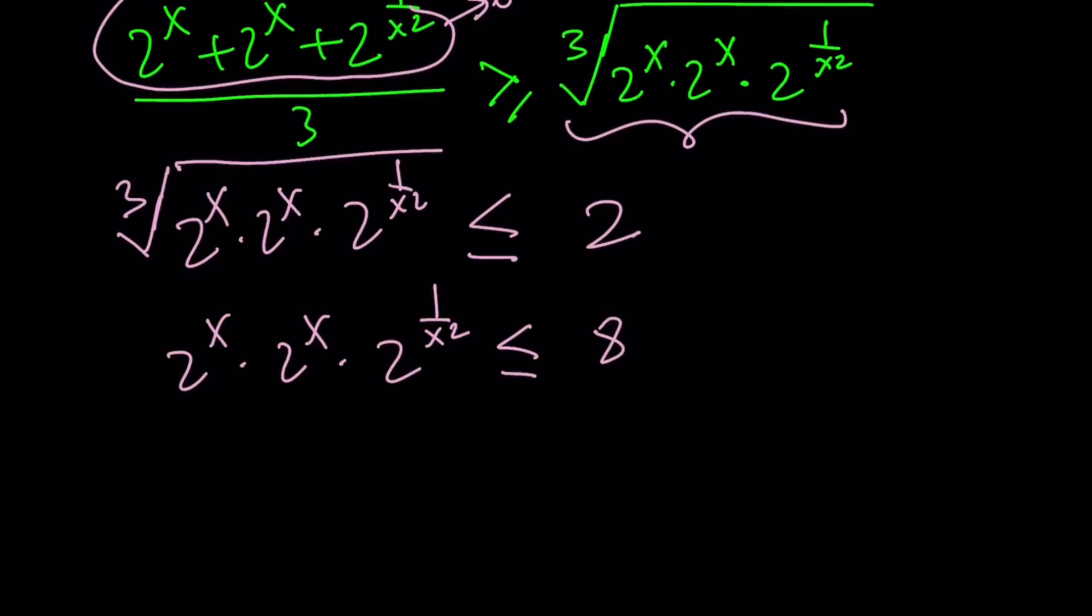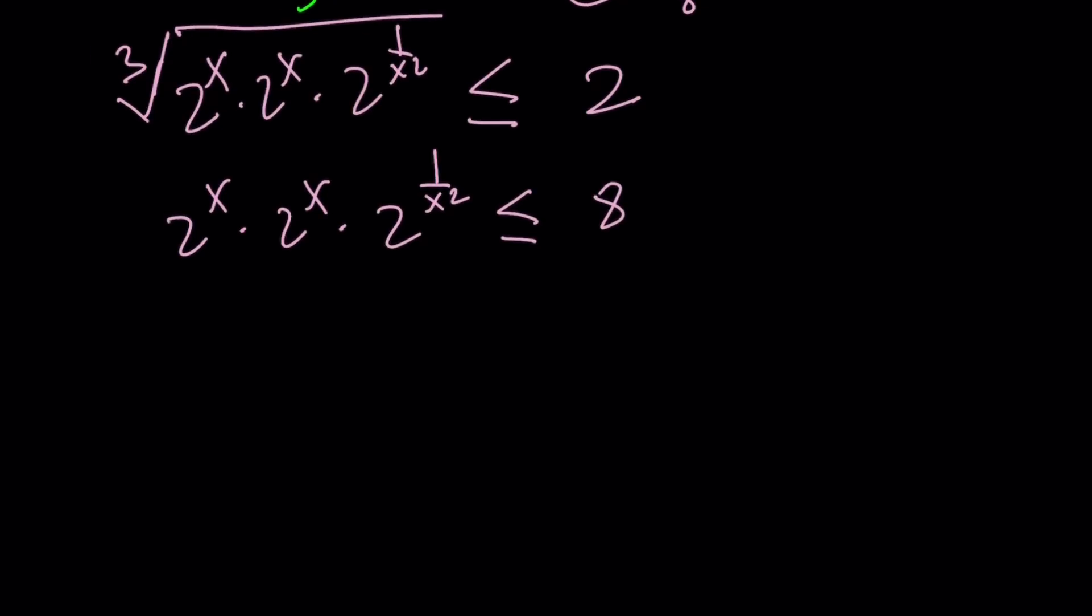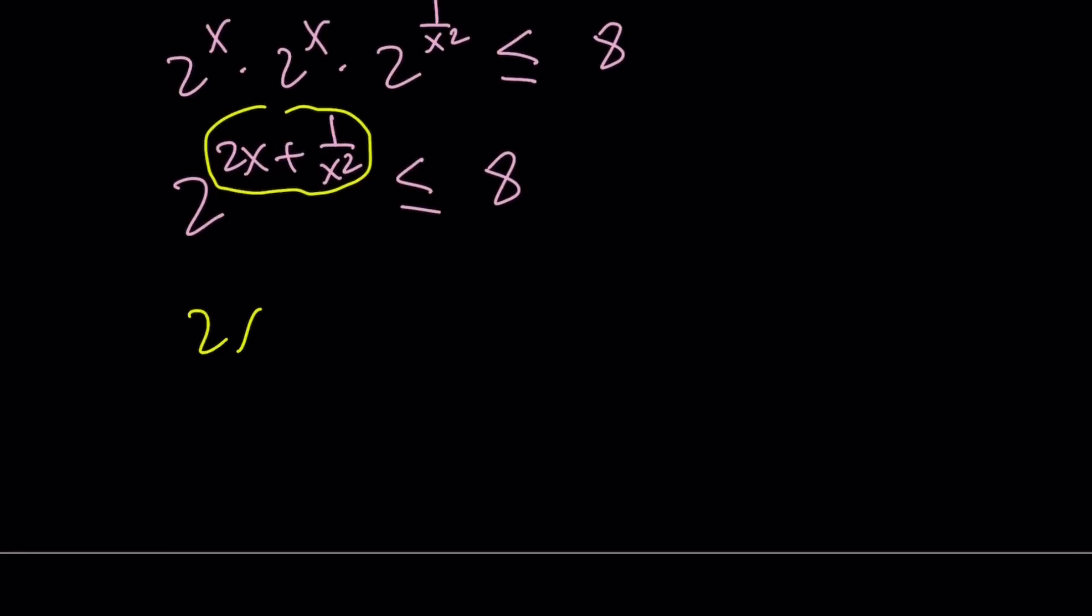Now, how does this help us? Well, first of all, we can combine these by adding the exponents. We can write this as 2 to the power x plus x, which is 2x, plus 1 over x squared, less than or equal to 8. Now, you have an expression like 2 to the power something is less than or equal to 8. It means, since 2 is greater than 1, it means the exponent is less than or equal to 3. So we can write it as 2x plus 1 over x squared is less than or equal to 3. We could also arrive at this result by logging both sides, base 2, since the base is greater than 1, the inequality is not going to change.